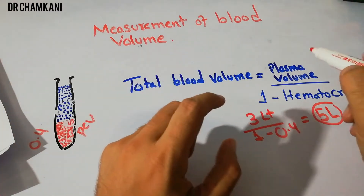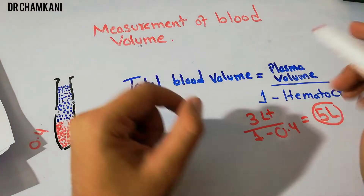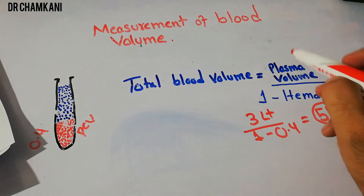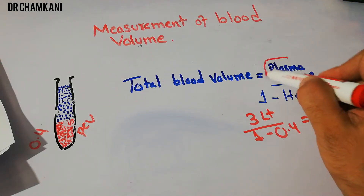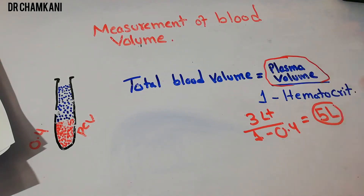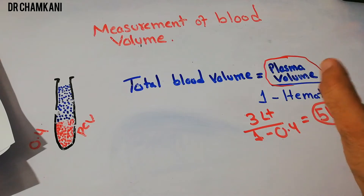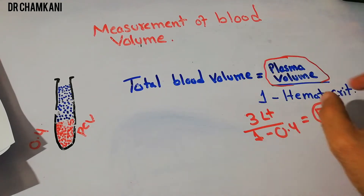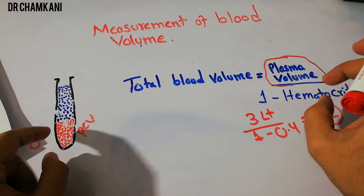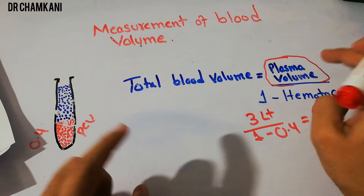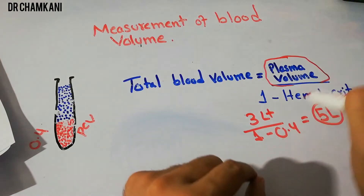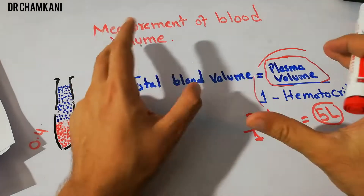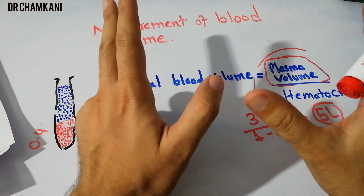To exactly understand how the indicator dilution method is used to determine plasma volume, you should watch the previous lectures where everything is discussed in detail. With the value of hematocrit and the value of plasma, and by putting them into this simple equation, we can determine the total blood volume.